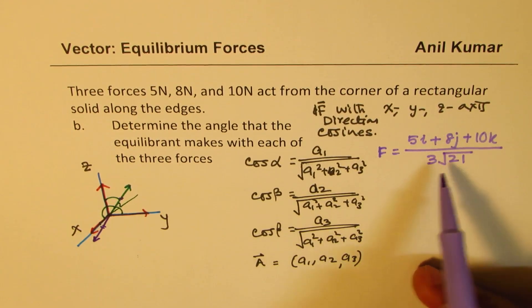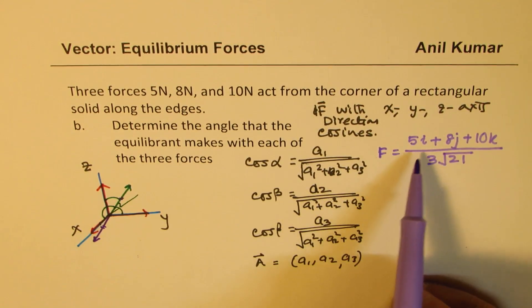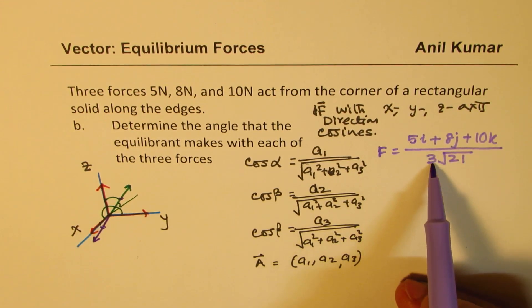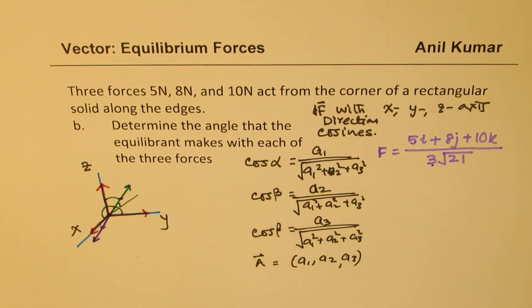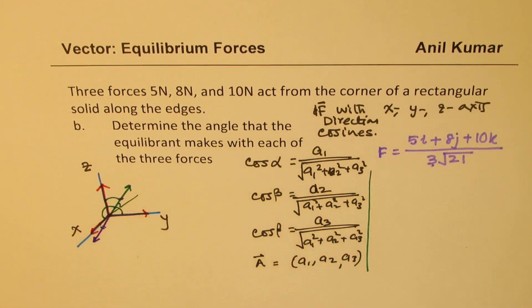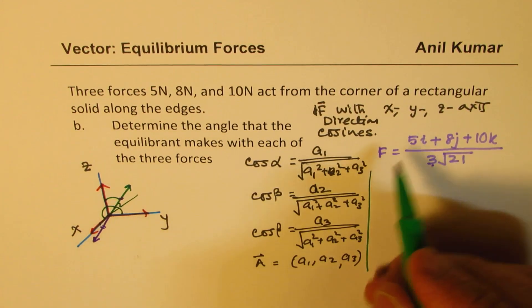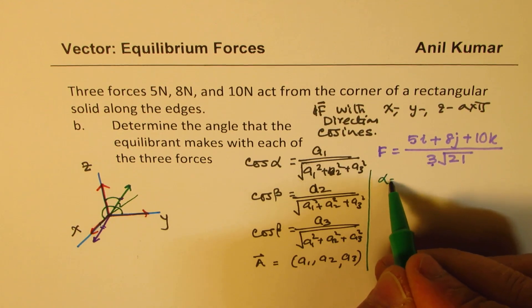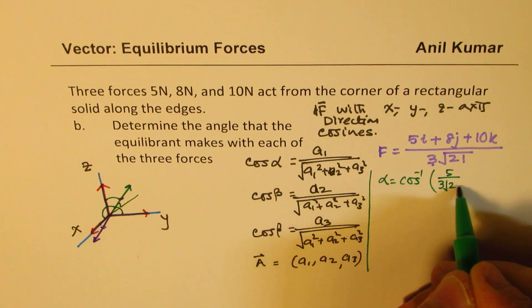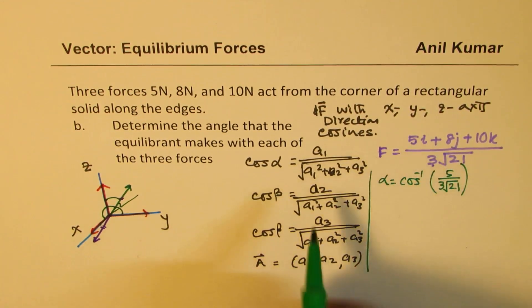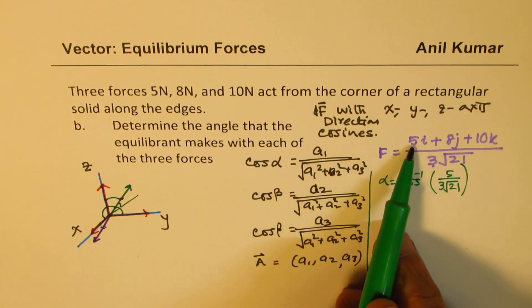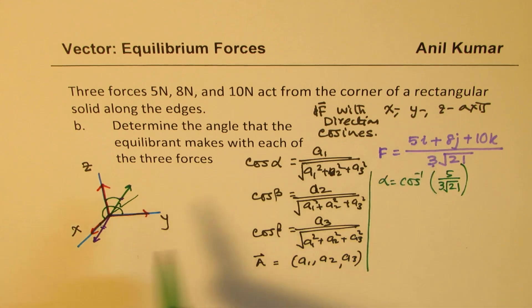Now if I use a unit vector you can see here, in that case cos alpha, cos beta and cos gamma could be treated as cos inverse of 5 over this. So this is a shortcut method. So from here we can find that alpha will be cos inverse of 5 over 3 square root 21. Does it make sense to you? This is the magnitude. We already divided by the magnitude. a1 is the component which is coefficient of i, that component along i.